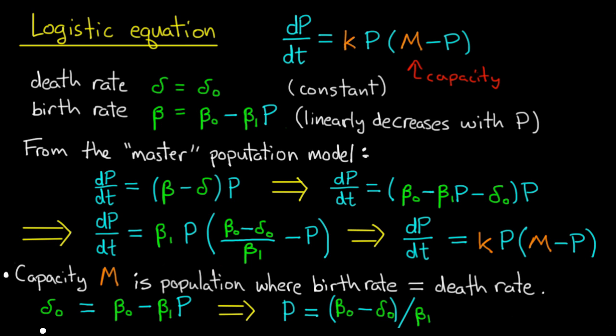So we can see this algebraically. Let the death rate delta zero equal beta zero minus beta one P. Now solve for P and we get P equals beta zero minus delta zero divided by beta one.